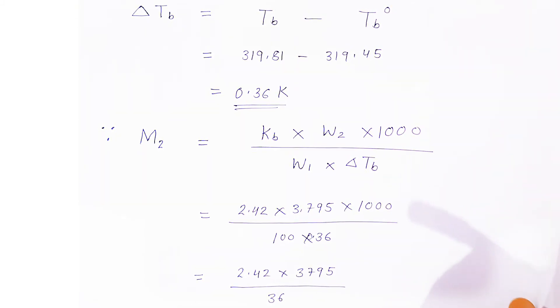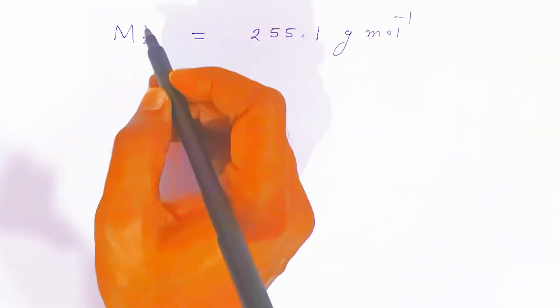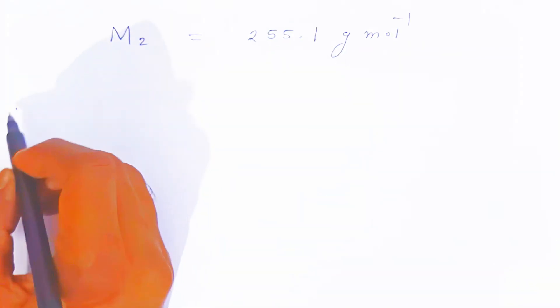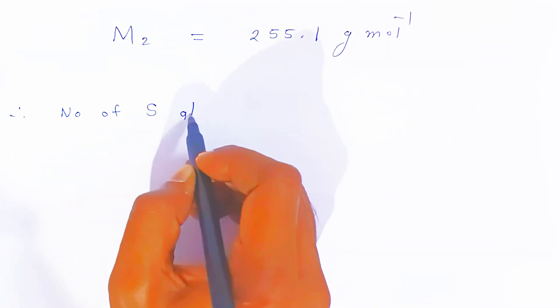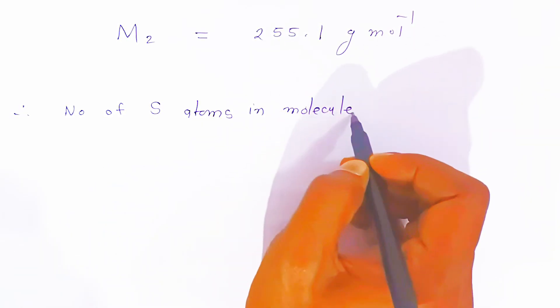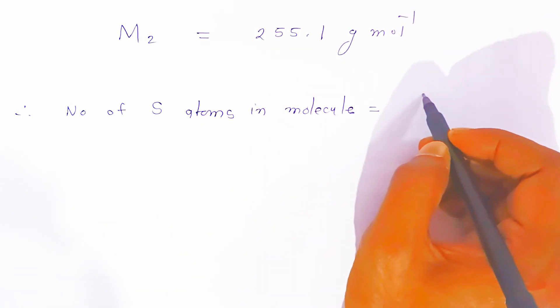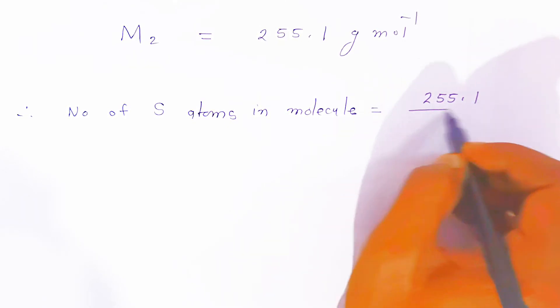Using the log table to solve the calculation, we get the molar mass M₂ = 255.1 gram per mole. This is the molar mass of sulfur in solution. Now to find the number of sulfur atoms in the molecule, we divide the molar mass 255.1 by the atomic mass 32.